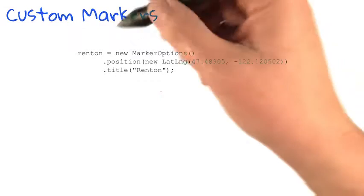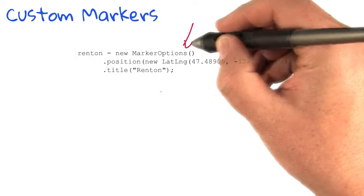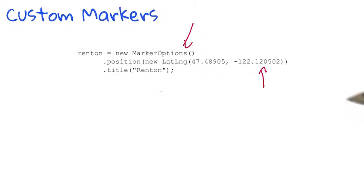Earlier we had code like this, where we say renton equals new MarkerOptions. We pass it a latitude and a longitude, and we set the title as a string.